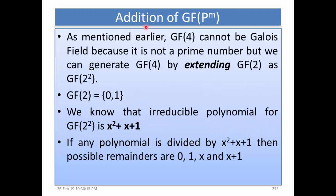Now we look at the addition in Galois field GF(2^m). GF4 cannot be a Galois field directly because 4 is not prime, but we can generate GF4 by extending GF2 as GF(2^2). Since GF2 equals {0, 1}, the irreducible polynomial for GF(2^2) is x^2 plus x plus 1. If any polynomial is divided by x^2 plus x plus 1, the possible remainders are 0, 1, x, and x plus 1 — the only four possible remainders.